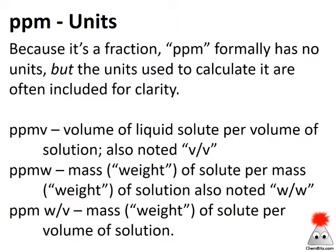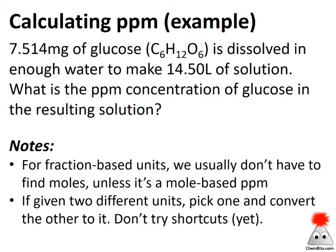One that's a little specialized is a weight-volume parts per million. That's when we're looking at the weight or mass of solute per volume of the solution. Let's jump right in and take a look at an example. If I've got 7.514 milligrams of glucose — there's the chemical formula for glucose — dissolved in enough water to make 14.50 liters of solution, what is the parts per million concentration of glucose in the resulting solution?